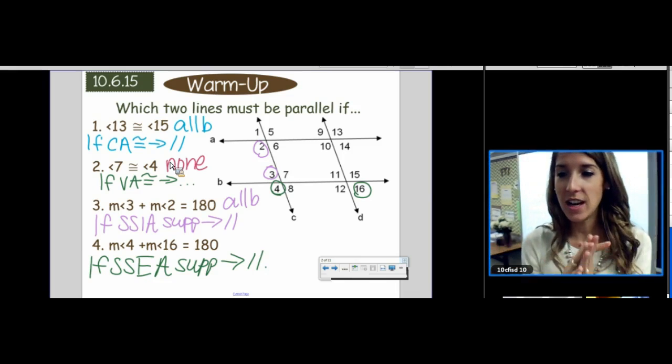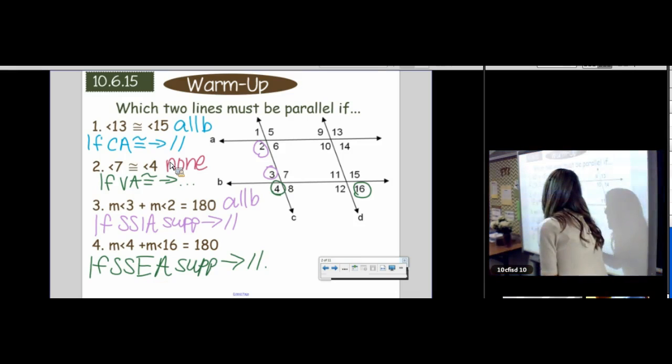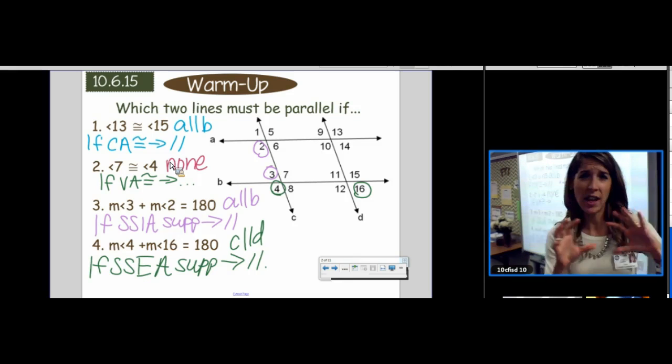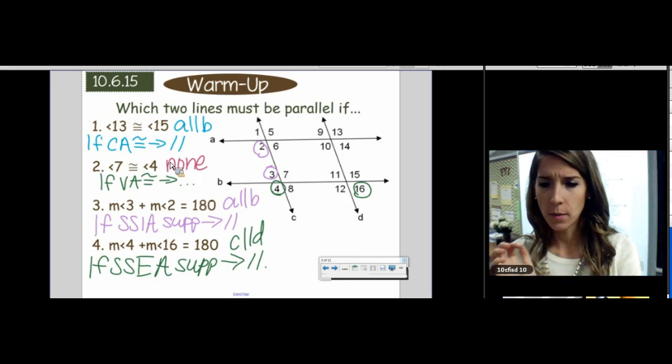This time we changed it, and with four and sixteen, the parallel lines are C and D. Is everyone able to see which lines are parallel, or do you need me to give you some extra tips? Are we good with this?